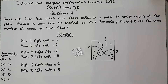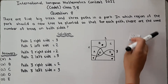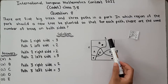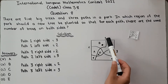In which region of the path should a new tree be planted so that for each path the same number of trees — 3 — are on both sides? So we have to find this. I have given names to the 3 paths.